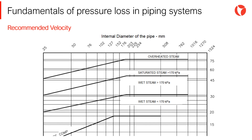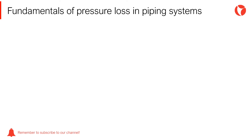From all the values mentioned, normally the parameter fixed is the velocity, since the diameter and pressure loss are a function of this. There are several publications and references that collect data from successful experiences, allowing designers to develop different projects. An example of this can be seen on screen for steam. There is not a unique solution when it comes to pipe sizing — there are different solutions that bring different implications.